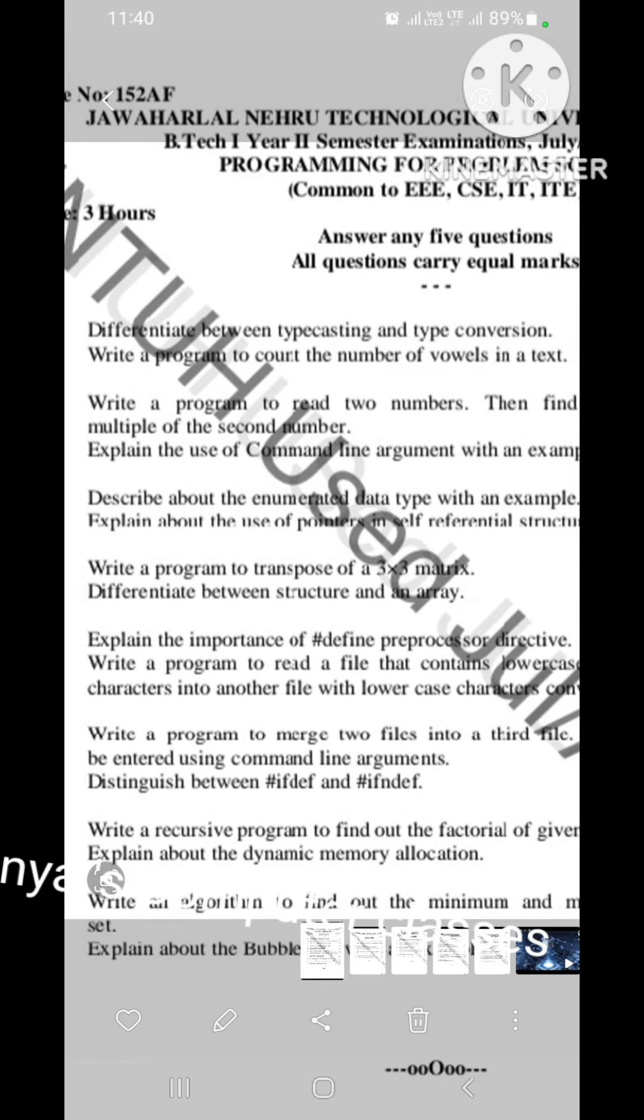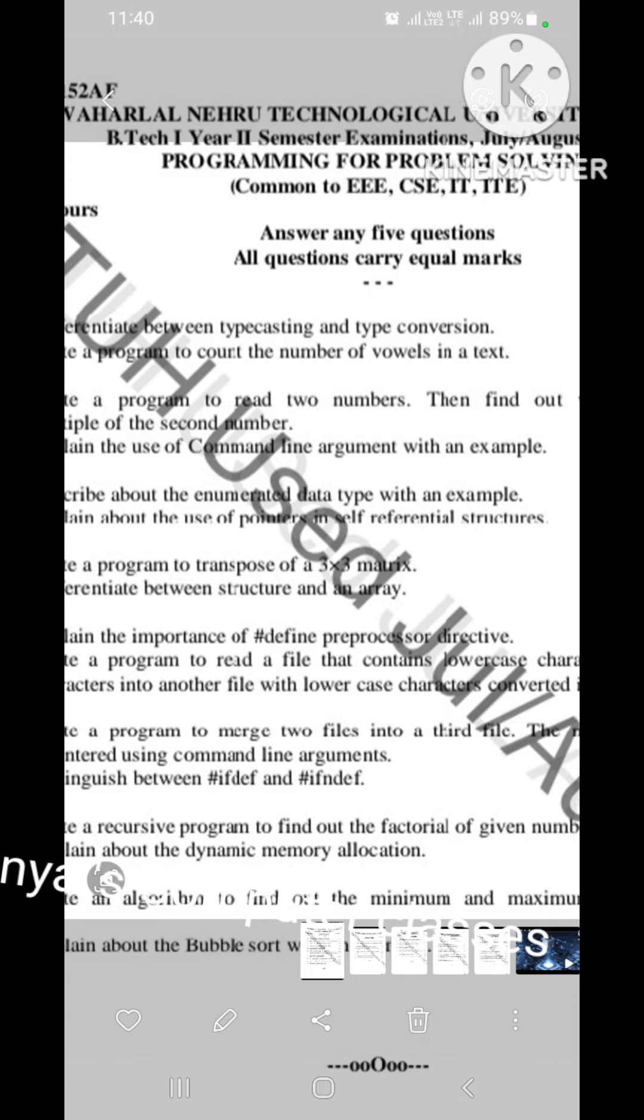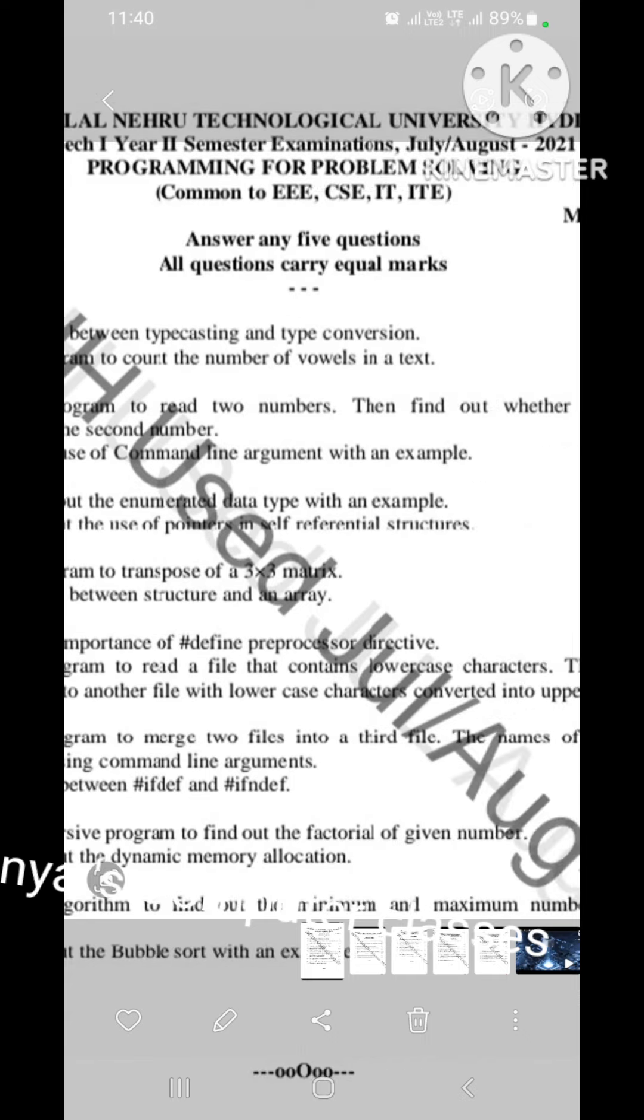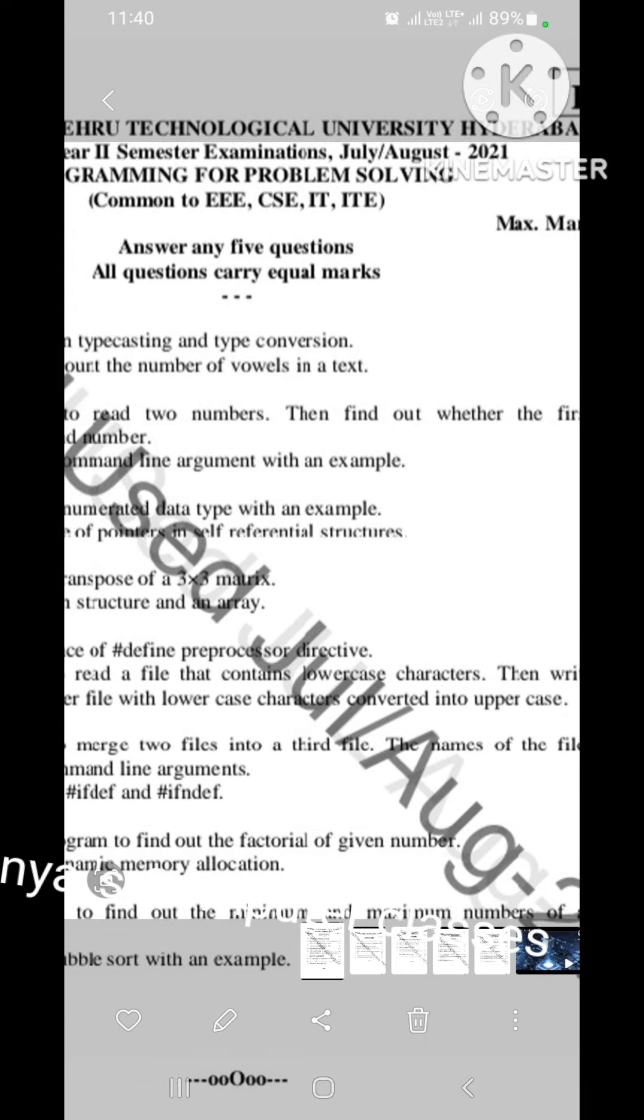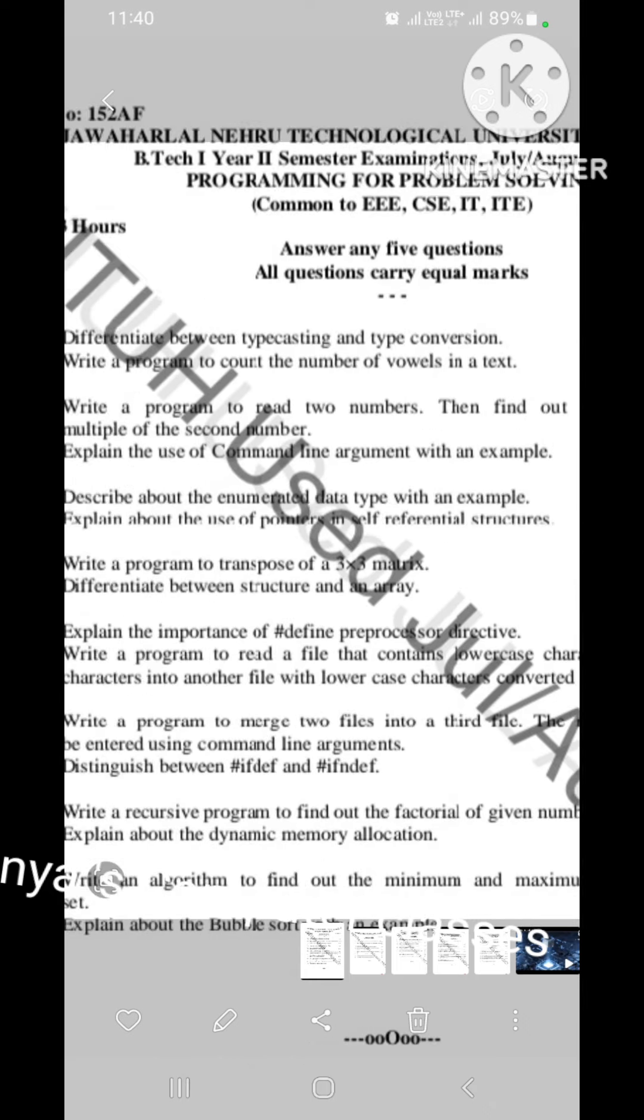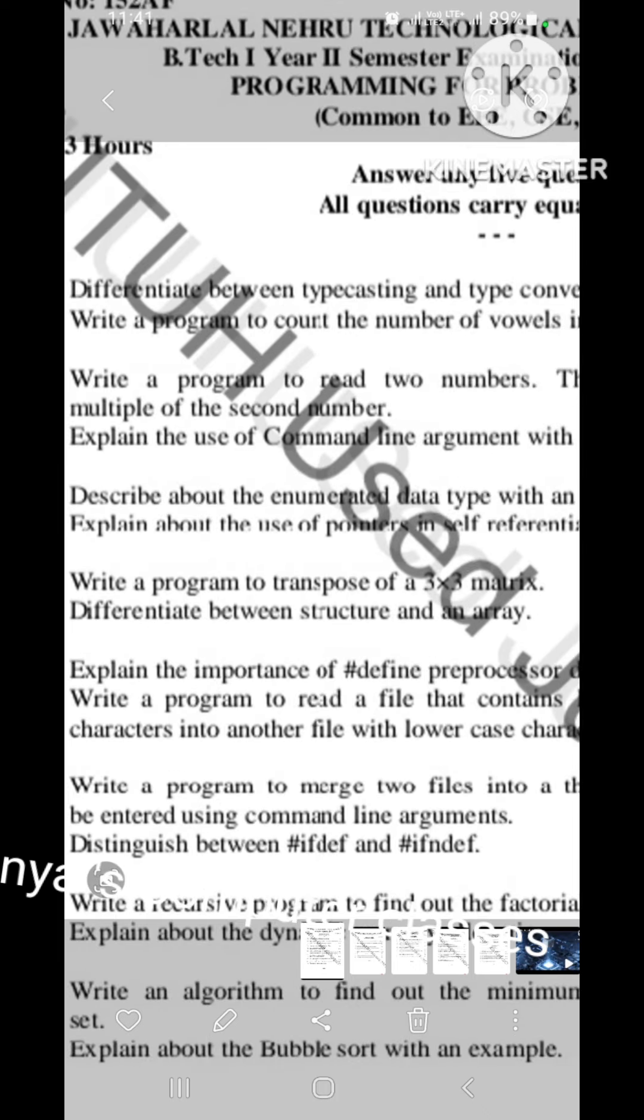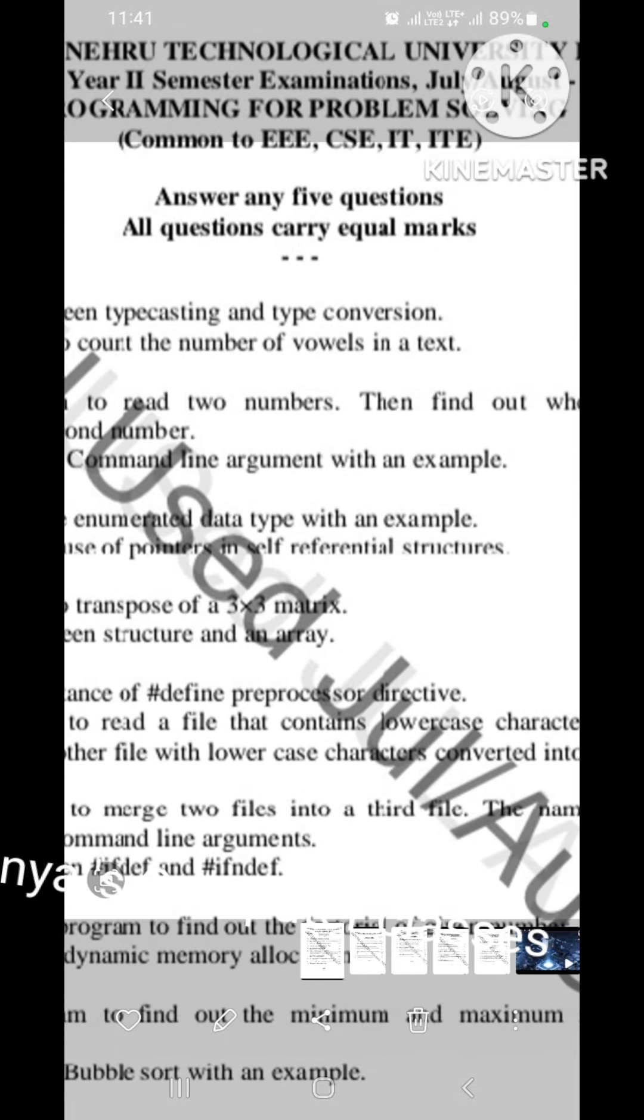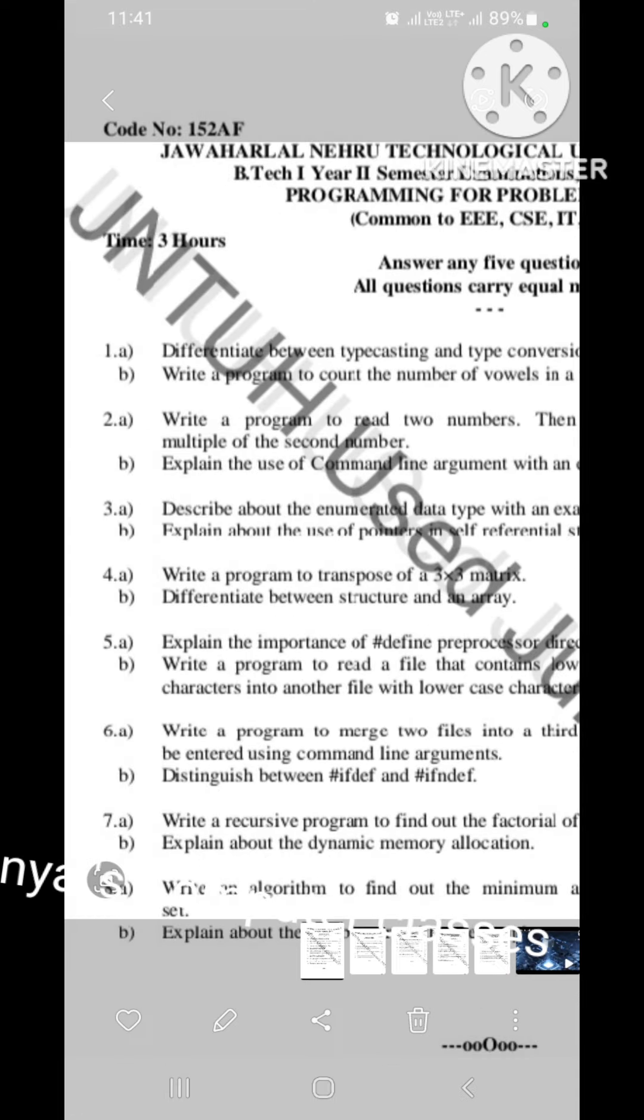Differentiate between typecasting and type conversion. This is for CSE paper. Differentiation between typecasting and type conversion, this is for 7 marks question. What is the difference? I already in my video, I put one. Just check it once. That is also short. Difference between typecasting and type conversion. And B bit is, write a program to count the number of vowels in a text. That is the program. That is why it is for 8 marks. So, 7 plus 8, 15 marks. That is question number 1.